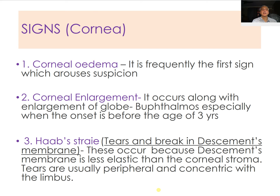A very important sign is Haab's striae — tears and breaks in the Descemet's membrane. When the corneal size increases, the Descemet's membrane, which is of a fixed length, snaps when the cornea grows beyond what it can accommodate. These occur because the Descemet's membrane is less elastic, and the breaks are usually peripheral and concentric with the limbus.